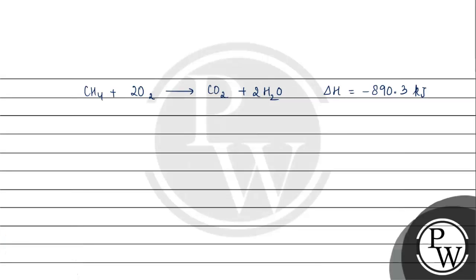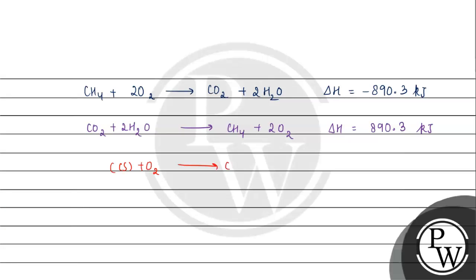Now to find the Enthalpy of Formation of Methane, we need to write the formation reaction. For the formation of Methane we need to manipulate the reactions — we'll reverse and adjust the carbon combustion reaction and hydrogen combustion reaction using Hess's Law.